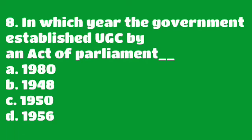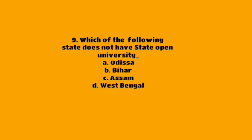Our next question: in which year did the government establish UGC by the act of Parliament? The correct answer is option D: 1956.